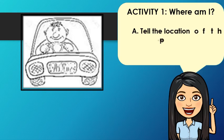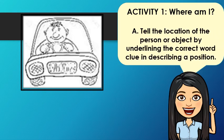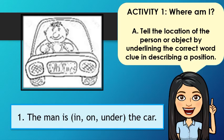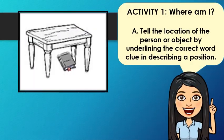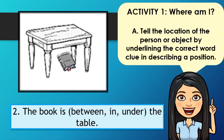Now let's have some activities. Where am I? Tell the location of the person or object by underlining the correct word clue in describing a position. Number 1: The man is (in / on / under) the car. Number 2: Tell the location of the book — the book is (between / in / under) the table.